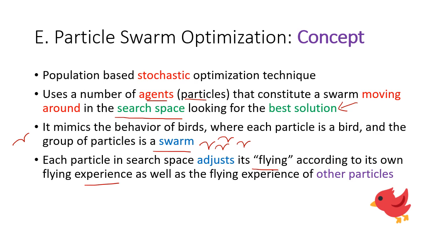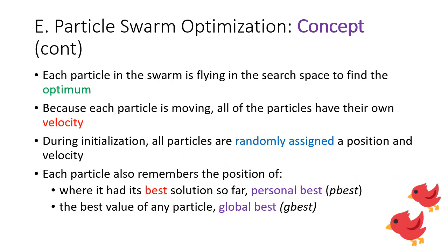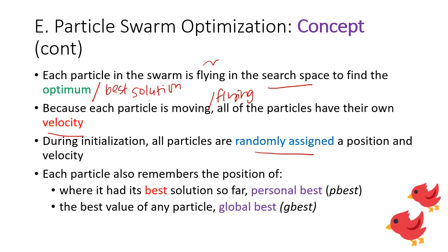Each particle adjusts its flying according to its own flying experience as well as the flying experience of other particles. Each particle in the swarm is flying in the search space to find the optimum, or best possible, solution. Because each particle is moving, all particles have their own velocity. During initialization, all particles are randomly assigned a position in the search space and a random velocity — so some birds might be flying very fast to the left and some very slow to the right.